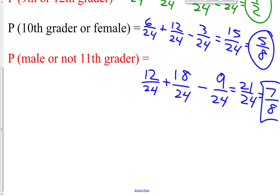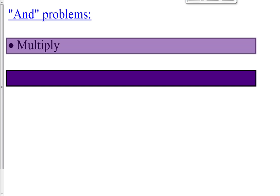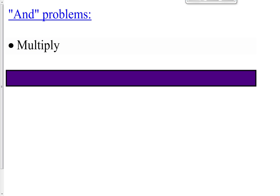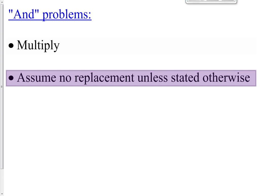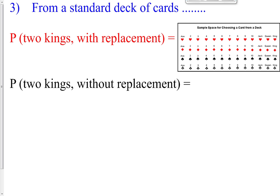That's OR probability. Now AND probability is next. AND probabilities are less likely to happen than OR probabilities. With OR probability you add; with AND probability you multiply. We need to assume there's no replacement unless stated otherwise — I'll tell you if I want you to replace; otherwise assume no replacement.